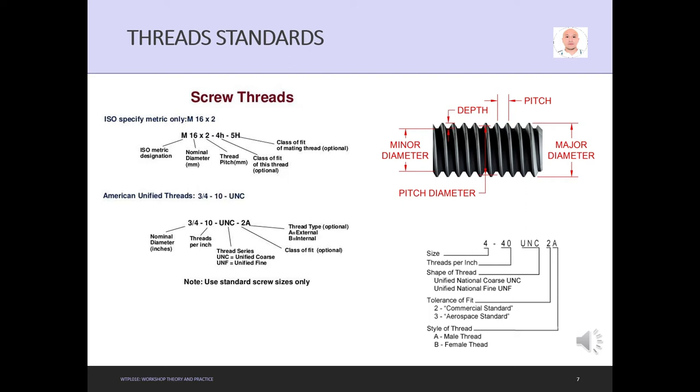The 2A indicates the class of fit (number 2) and thread type (A for external, B for internal). Note that this designation is optional and applies to standard screw threads. Additional specifications: For example, 4-40 UNC 2A means size 4, 40 TPI, unified coarse, tolerance class 2 for commercial applications (3 is aerospace), and A means external thread.